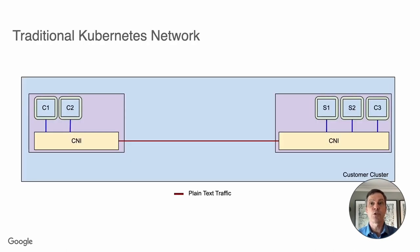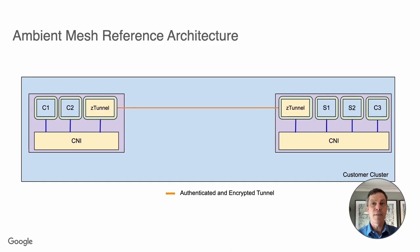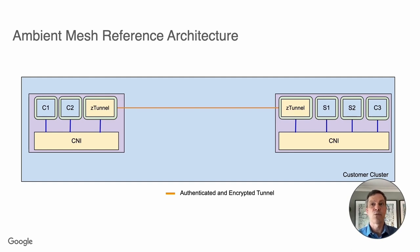Here we see a traditional Kubernetes network with a CNI and a few pods running on two nodes. With a sidecar data plane, we would need to modify the pod specification and restart the pod for each workload that participates in the mesh. With Ambient Mesh, we replace the sidecar with a node-level component that handles the zero-trust MTLS encryption, L4 policies, and observability. Workloads that wish to participate in the mesh are left unmodified, and their traffic is simply redirected through this component.